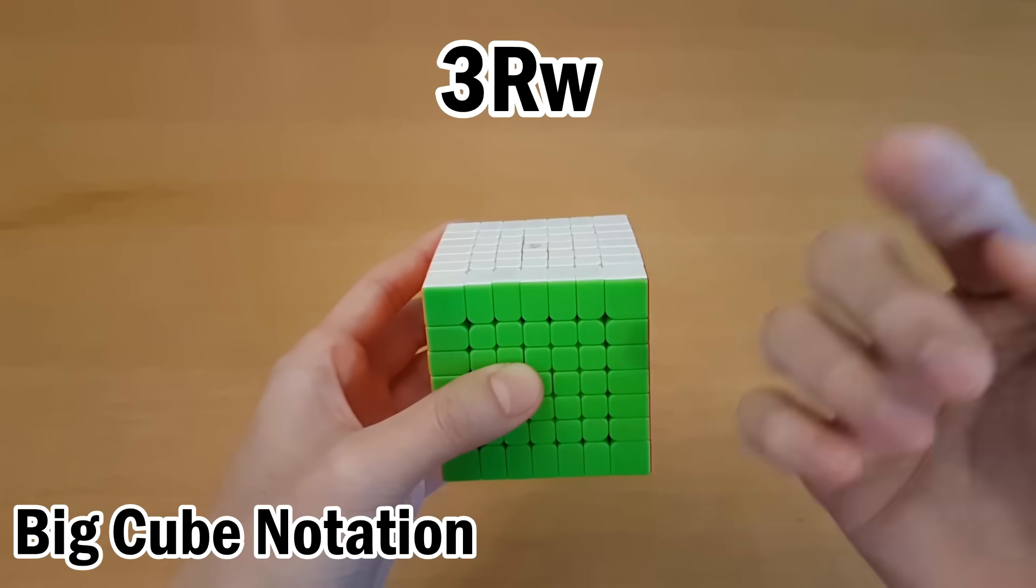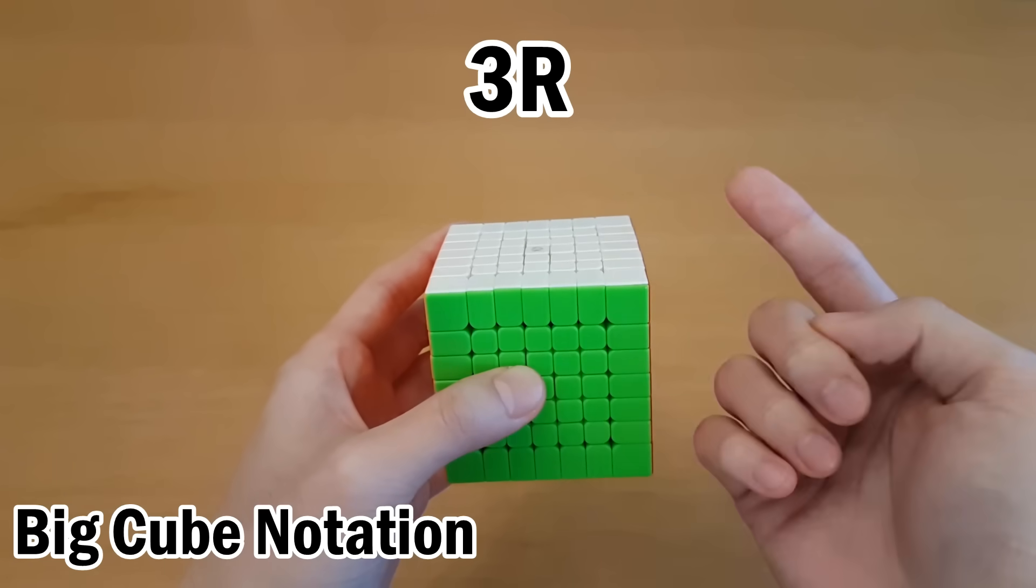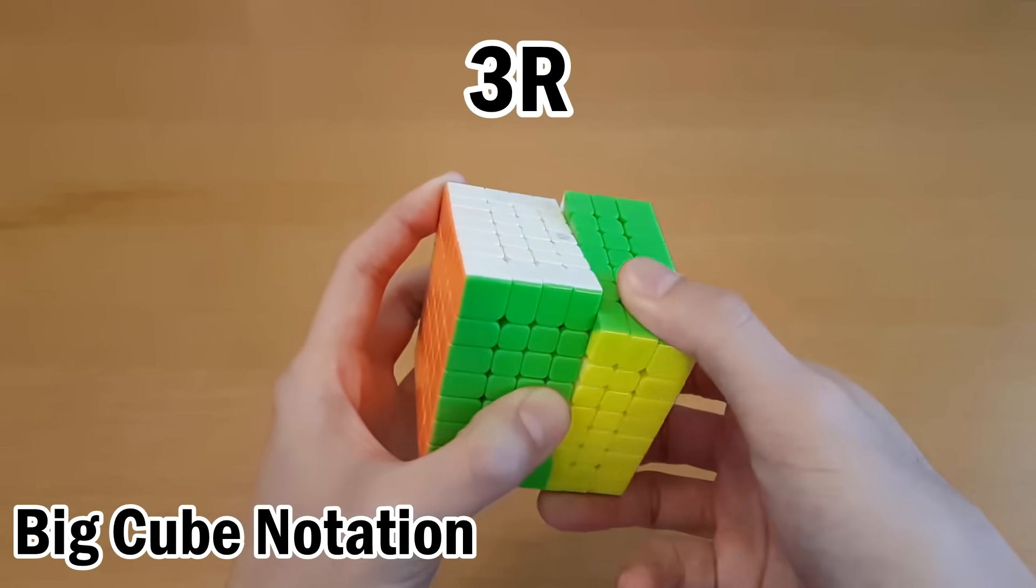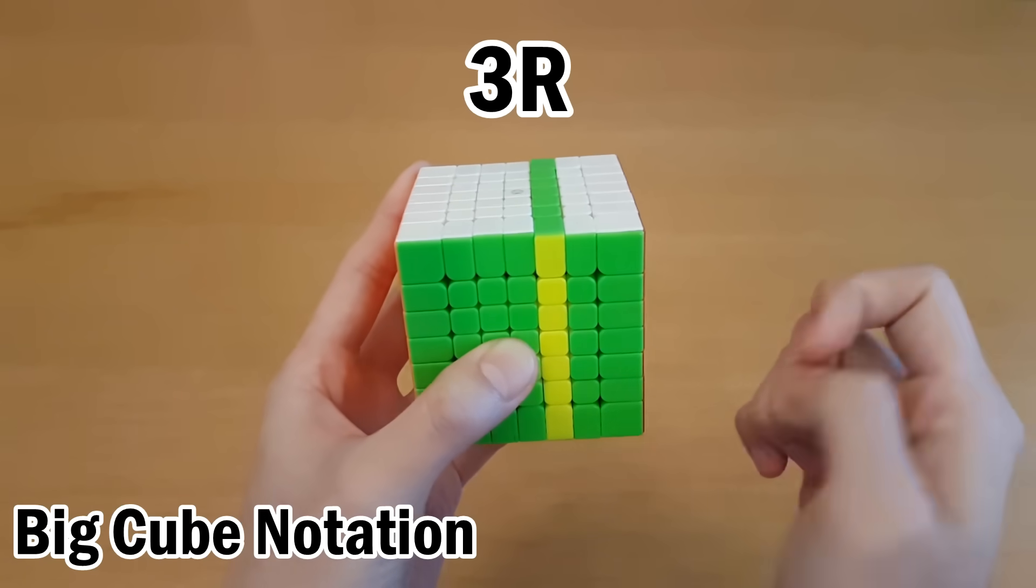If there's a number before the notation, it tells you which layer to move, but if there's no wide at the end, that means you just move that layer only. So 3R means just turn the third layer from the right like this.